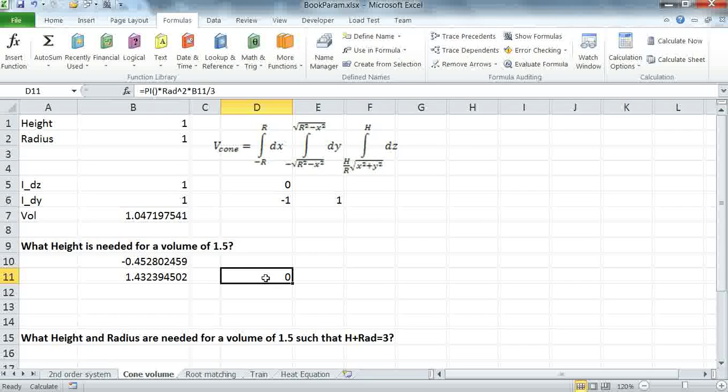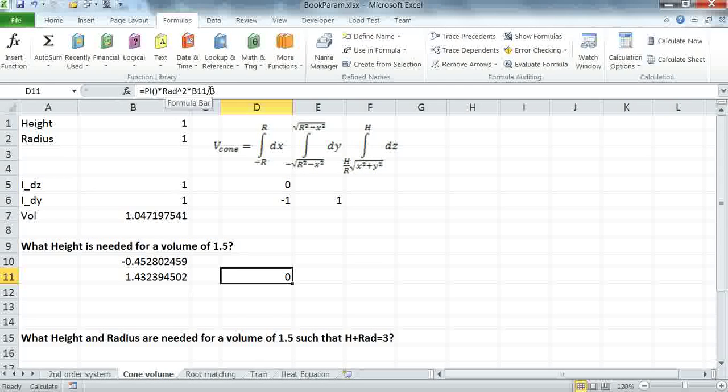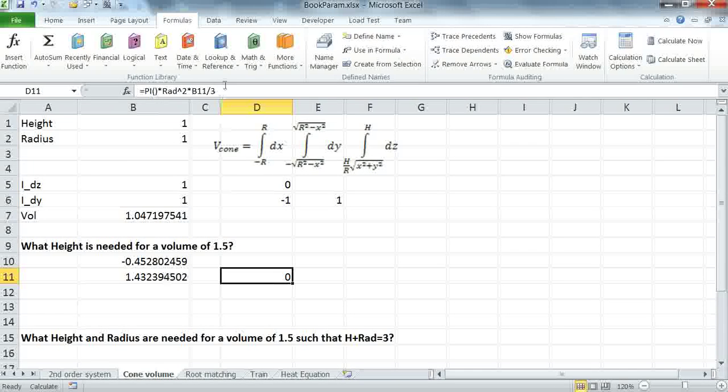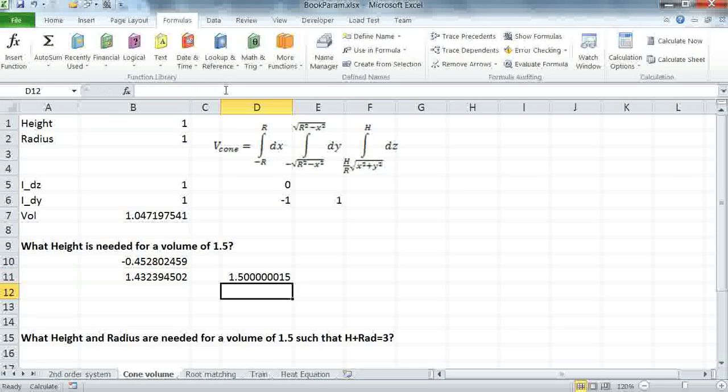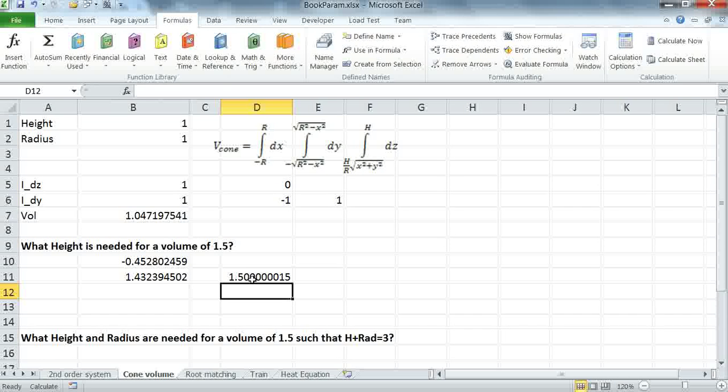I can actually verify the accuracy I obtained relying on the analytical formula for the volume of a cone. In cell D11, I'm just using that formula, and I'm replacing the height by the value computed by the solver. And if we compute this value, we see we're pretty close to the desired target of 1.5.